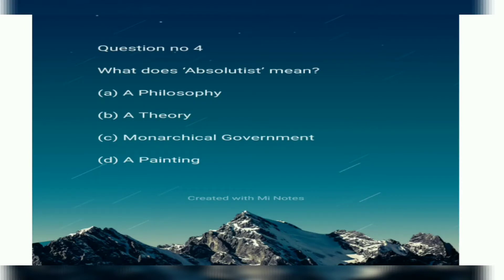What does 'absolutist' mean? Option A: Philosophy. Option B: Theory. Option C: Monarchical government. Option D: Appending.